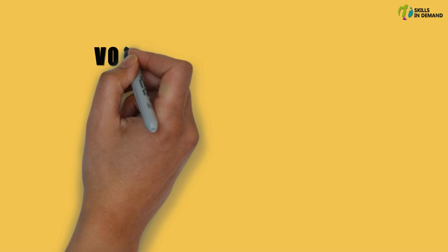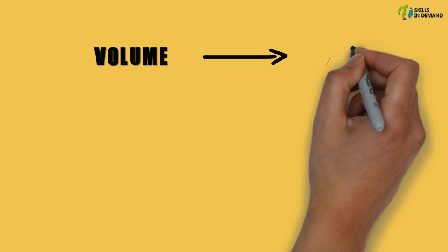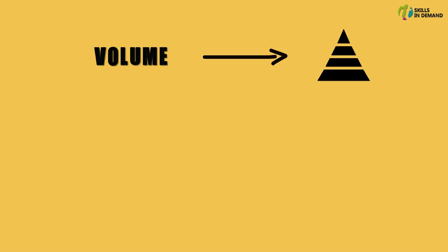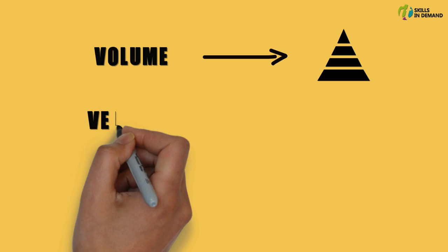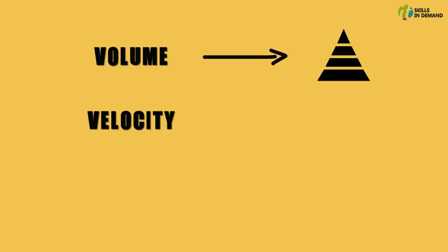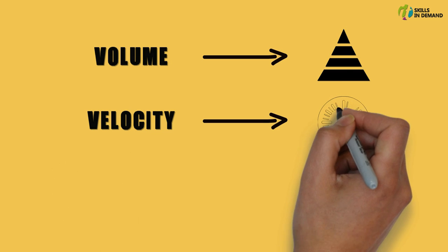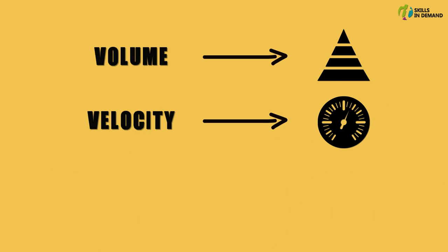The first one is volume. Volume refers to the amount of data that is getting generated. The next one is velocity. Velocity refers to the speed at which this data is getting generated.